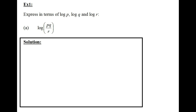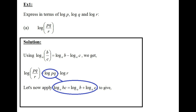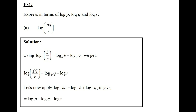I'm going to use the law log of b over c to the base of a, which equals log of b to the base of a minus log of c to the base of a, to rewrite the entire term as log of pq minus log of r. Then applying the law log of bc to the base of a equals log of b to the base of a plus log of c to the base of a to log of pq, we get log of p plus log of q minus log of r. This is the solution to example 1a.